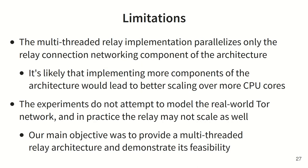This multi-threaded implementation and experiments have some important limitations. The multi-threaded implementation parallelizes only specific parts of our architecture and some elements are missing, but it already demonstrates a significant performance improvement on both limited and high performance hardware. It's likely that implementing more parts of the architecture would lead to better scaling over more CPU cores, as our implementation does not fully parallelize the end-to-end processing of cells. Also, our experimental design is meant to demonstrate the feasibility of the architecture, and not to model a real-world Tor network. In practice, a multi-threaded relay may not scale as well as it did in our experiments.